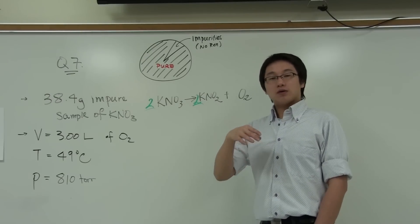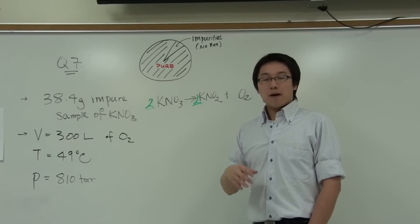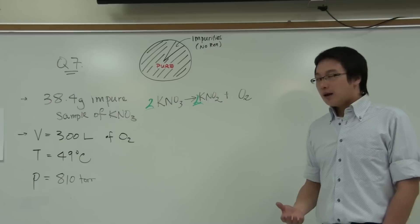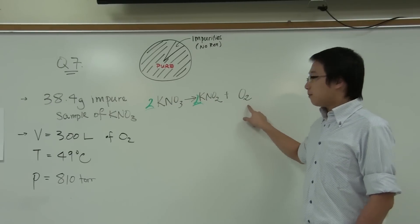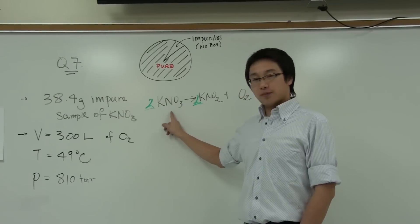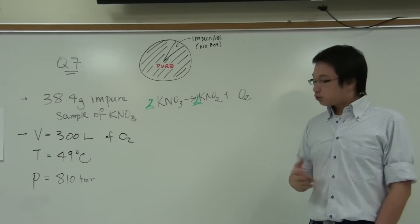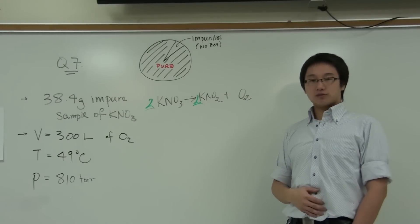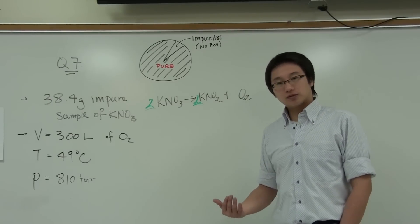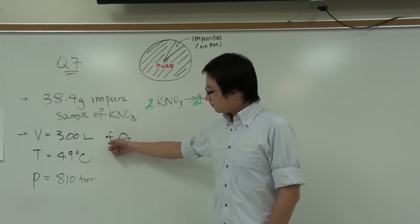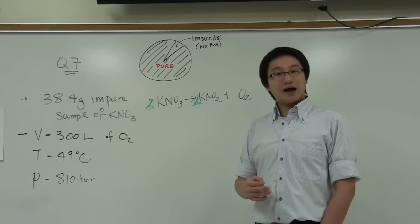Now, how do we find out the number of moles of potassium nitrate? You can find out the moles of potassium nitrate by using stoichiometry. Because we have some information about O2 and it may help us to find out how many moles of potassium nitrate. Now, do we have the moles of oxygen? Well, it's not explicitly given. But how can we find it out? Well, with the volume, temperature, and pressure, we can definitely use the ideal gas law.